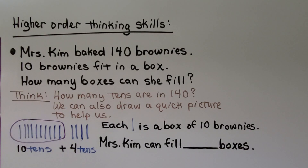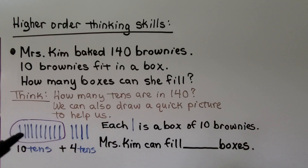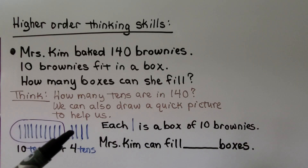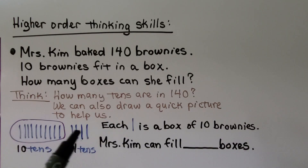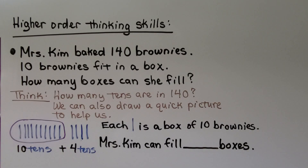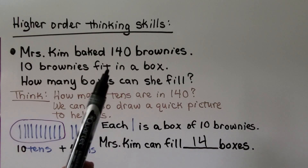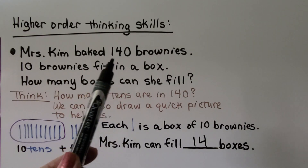Now let's try some higher order thinking skills — that means we really need to think. Mrs. Kim baked 140 brownies. 10 brownies fit in a box. How many boxes can she fill? We think: how many tens are in 140? We can draw a quick picture — 10 tens plus 4 tens. That's 100 and 4 more tens is 40, so that's 10 plus 4. If you said she can fill 14 boxes, you're right. We can look at 140 and say this is 14 tens.